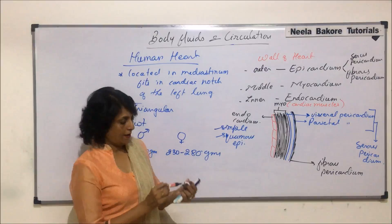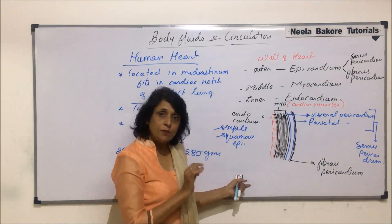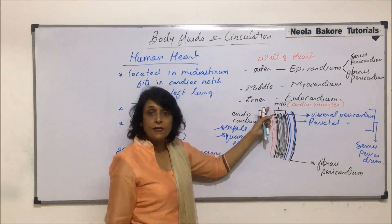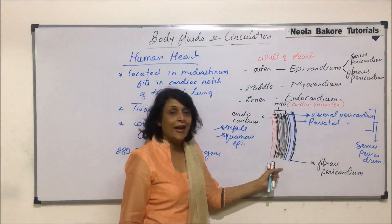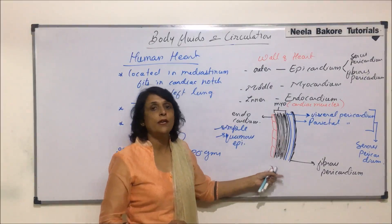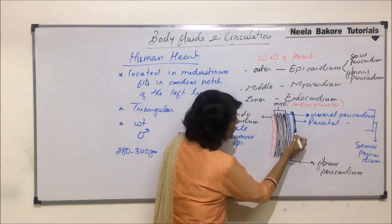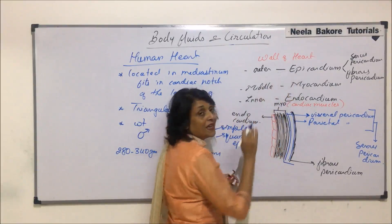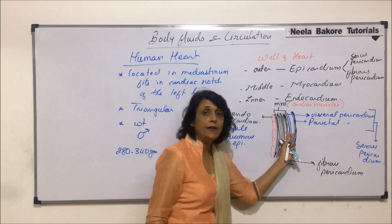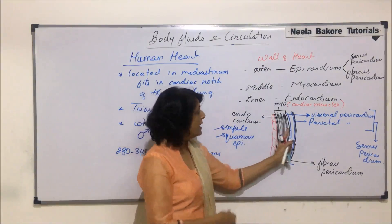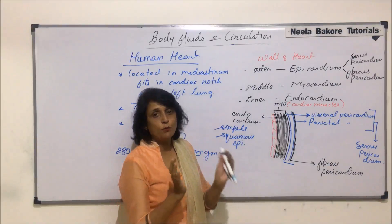To summarize the three layers: the innermost endocardium is simple squamous epithelium; the thickest middle layer is myocardium made of cardiac muscles with gap junctions enabling rhythmic contraction; and the outermost epicardium consists of serous pericardium — with its inner visceral and outer parietal layers — plus a thin fibrous capsule on the outside that provides structural strength.